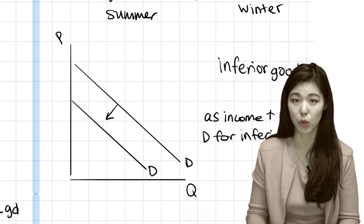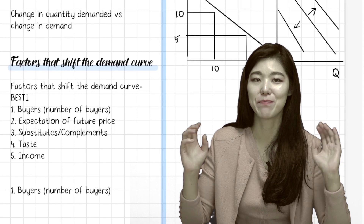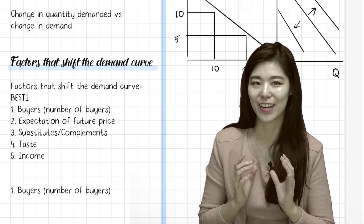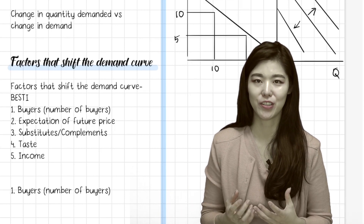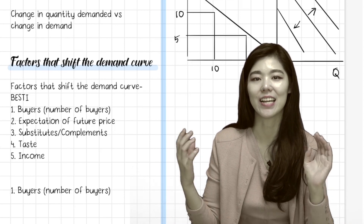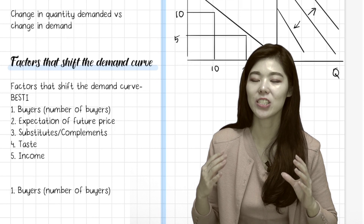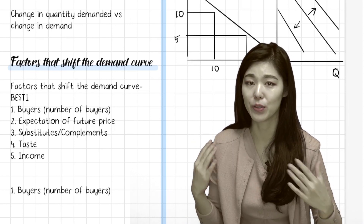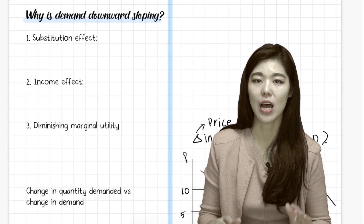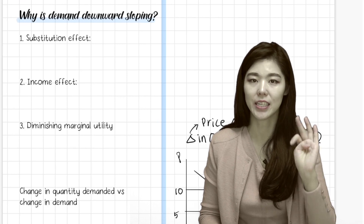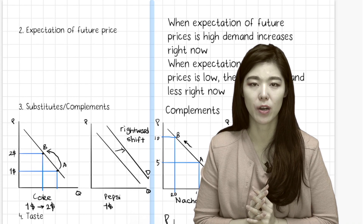Recap on what we've learned: the factors that shift the demand curve are BESTIE. The besties affect our demand — it stands for number of Buyers, Buyer's Expectation of future prices, Substitutes and complements, Taste, and Income. These factors change and shift the demand curve. Prices will only change the quantity demanded of that good — it's a movement along the demand curve. And why is the demand curve downward sloping? Because of the substitution effect, income effect, and diminishing marginal utility.